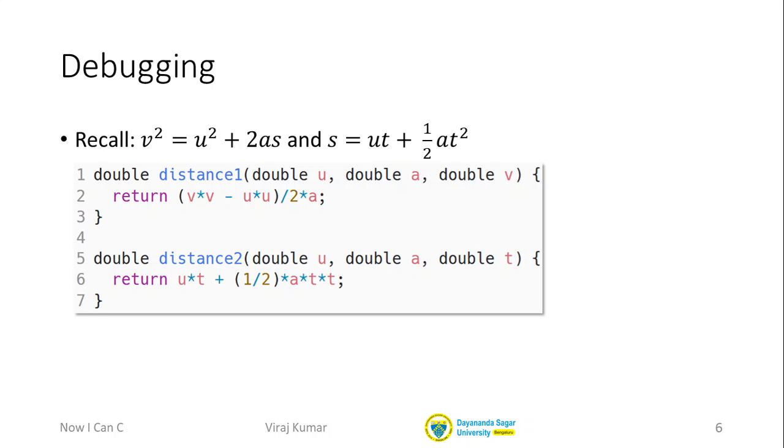Similarly, the second function distance2, we are given u, a, and t, and now we use the second formula. This is just a direct application of the formula. The distance s is u times t, that's what I have on line 6, plus half a t square. So I just write that as half times a times t times t. Both these functions seem obviously correct, but it turns out there are bugs in at least one of them, possibly both.